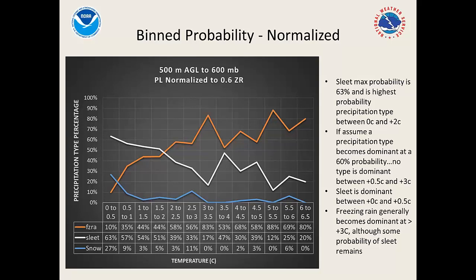This agrees with a lot of what's currently out there. One thing that stood out is that sleet never really gets very high — it seemed to always have some chance of freezing rain, even at these lower temperatures.